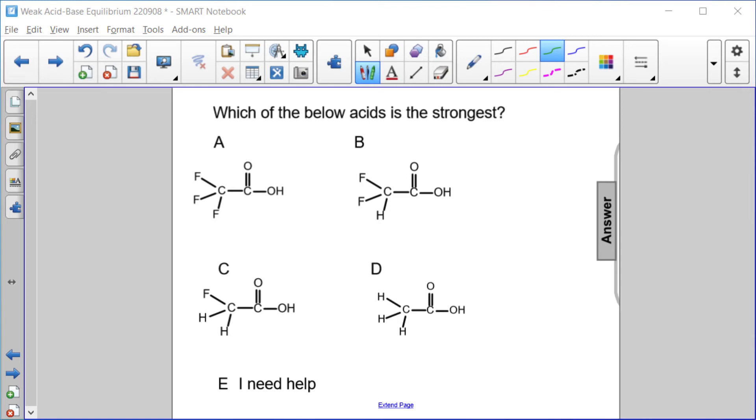Which of the below acids is the strongest? So take a look here. In each case we have a carboxylic acid, C double bond O, single bond OH. So this is our acidic proton in every case.